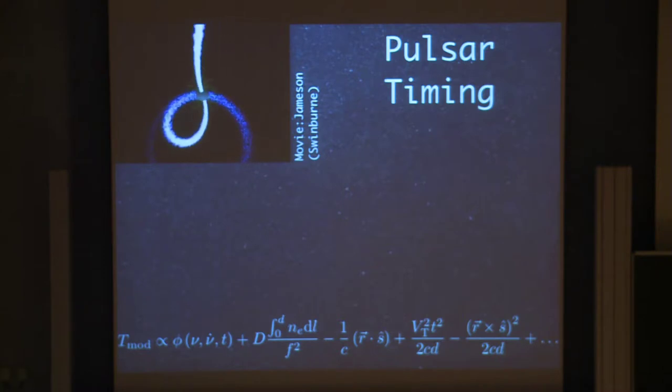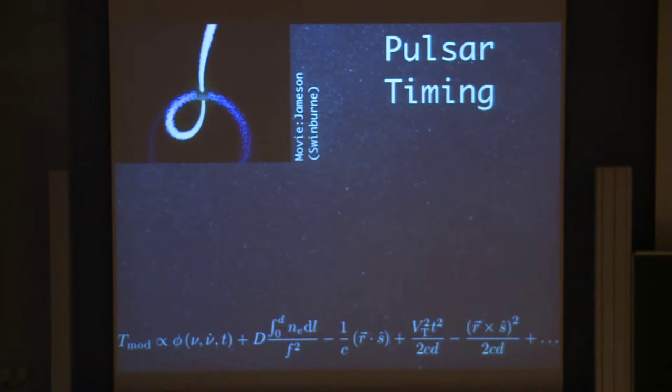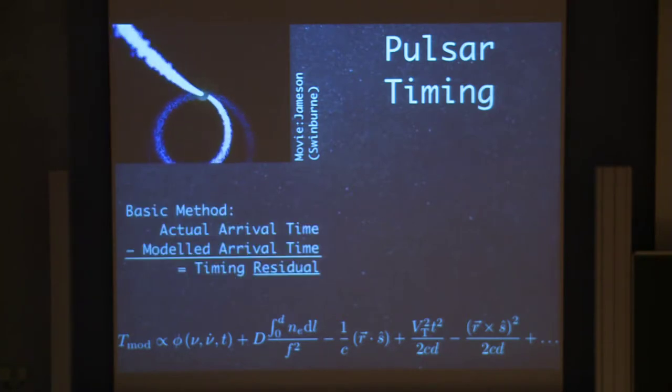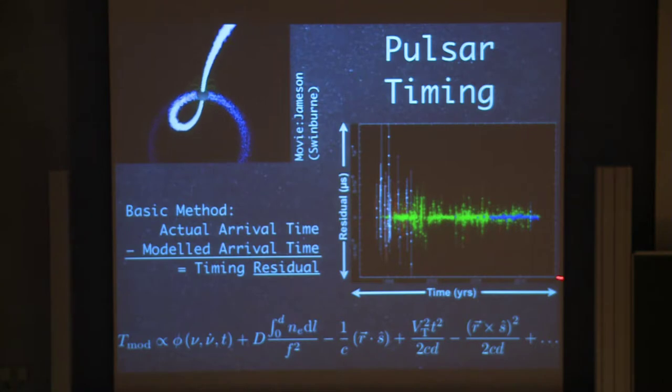Of course, especially if you were to detect a pulsar around Sagittarius A star, that would be where all of the interesting science is. So, you have your model, you have your observations, you can subtract one from the other, resulting in the residuals, predictably. What do they typically look like? Something like this. On the x-axis you have the date of the observation, on the y-axis you have the residual.